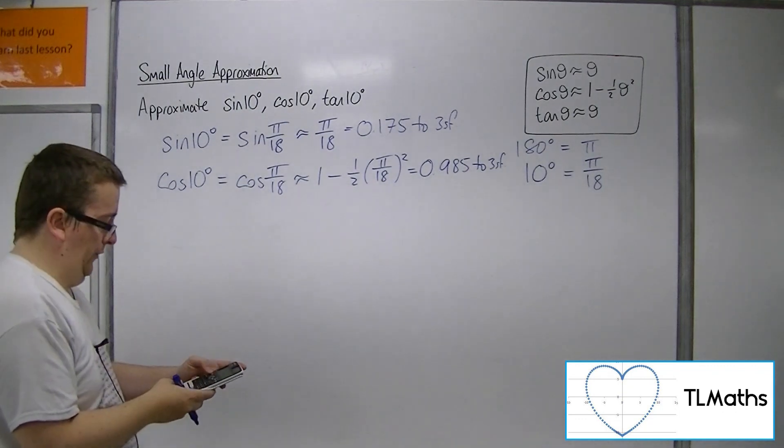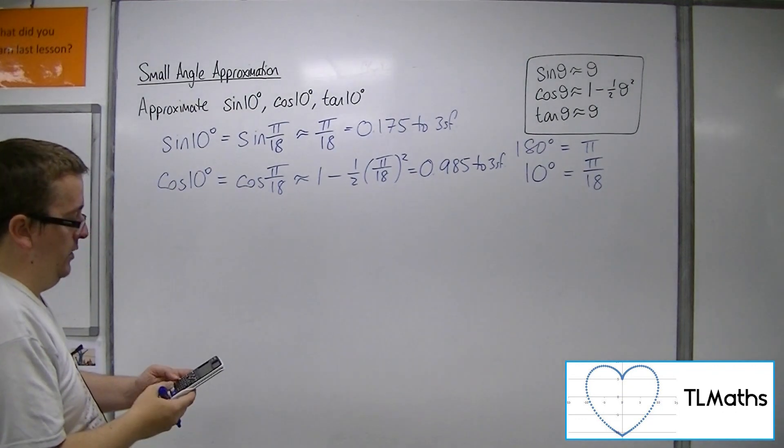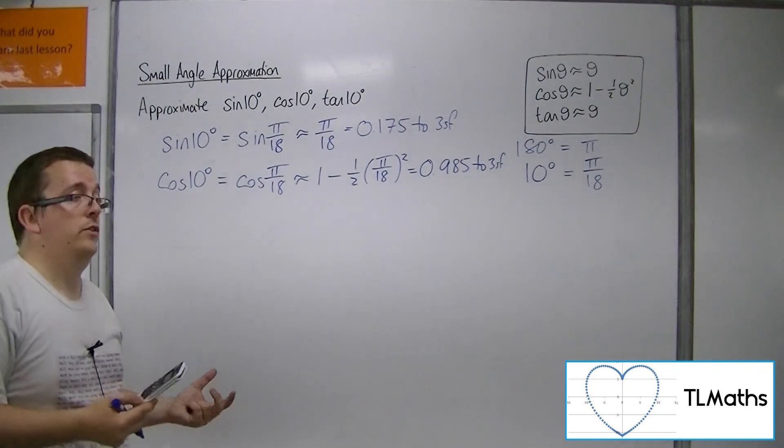So if you try cos of pi over 18, you get 0.985 to 3 sig fig.